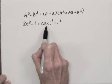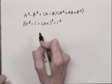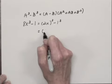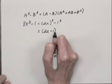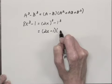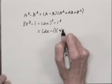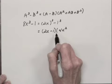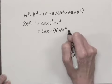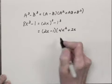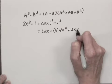Here A is 2x and B is 1. So the factorization is (2x - 1) times the quantity (2x)², which is 4x², plus 2x times 1, or plus 2x, plus B², which is 1² or 1.